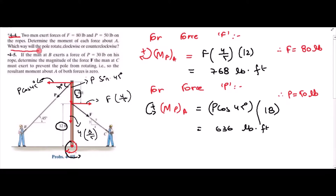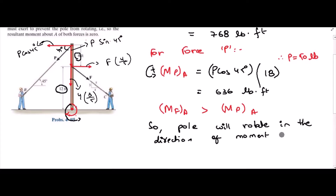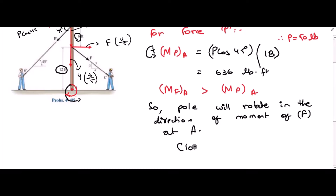For the last part of the question — which way will the pole rotate, clockwise or counterclockwise? Looking at the individual moments, the moment of force F about point A is greater than the moment of force P about point A. So the pole will rotate in the direction of the moment of force F, and the sense of the moment of force F is clockwise. So the pole will rotate clockwise. This is the answer to the first problem.